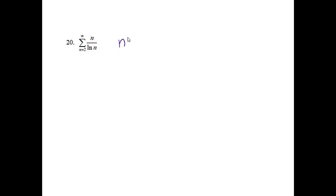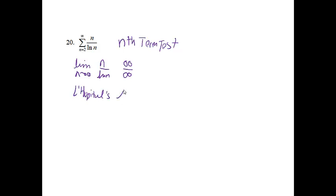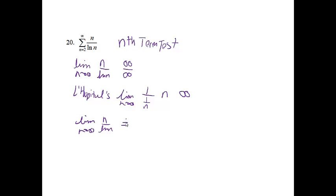Number 20: the series from n equals 2 to infinity of n over ln(n). We could choose many different approaches, but let's take the easiest route — the nth term test. Finding the limit as n approaches infinity of n over ln(n): plugging in infinity gives ∞/∞, so use L'Hôpital's rule. The derivative of n is 1; the derivative of ln(n) is 1 over n. Multiplying by the reciprocal gives n, and as n approaches infinity, that's infinity. Since the limit as n approaches infinity of n over ln(n) does not equal 0, the series must diverge.